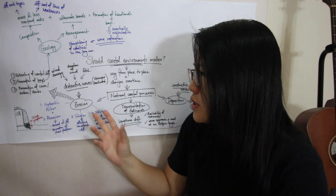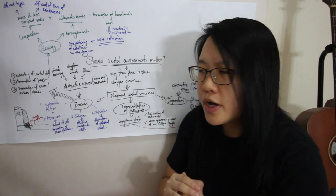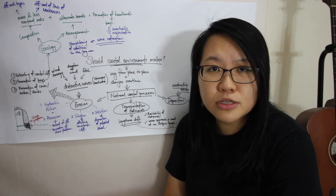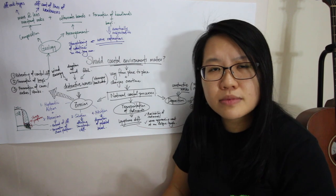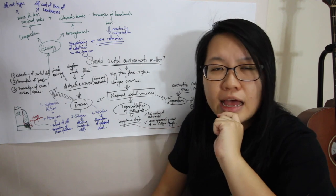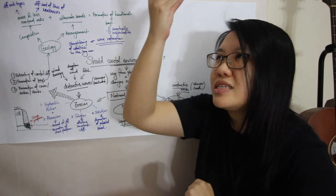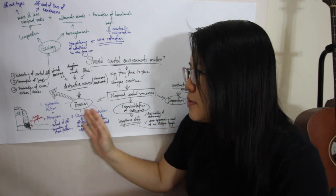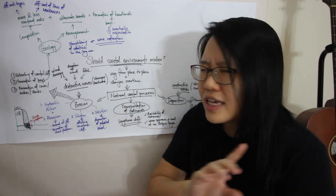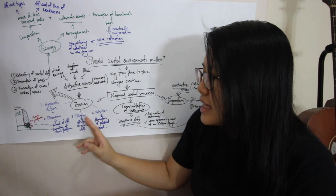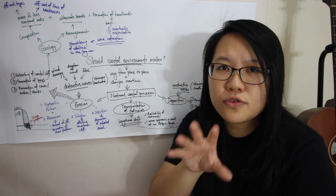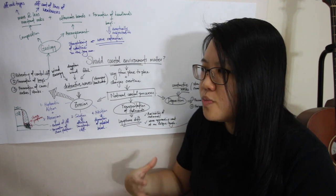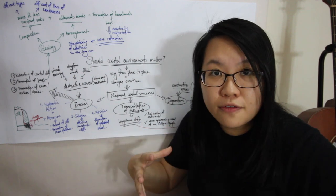The next thing to note is solution, which some people call corrosion. This is only applicable to specific rock types — one good example would be limestone cliffs. That's why if you look at some limestone caves you'll notice stalactites and stalagmites, which are basically due to the process of solution. Just understand that solution is only applicable to certain rock types.